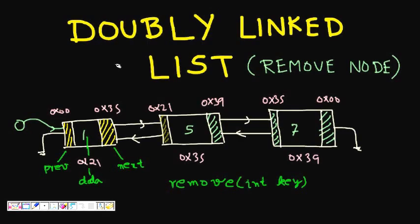In this lecture we are going to learn about removing a node from a doubly linked list. We are given a doubly linked list with several nodes and asked to remove a node with a given key. Let's first see the structure of the doubly linked list.